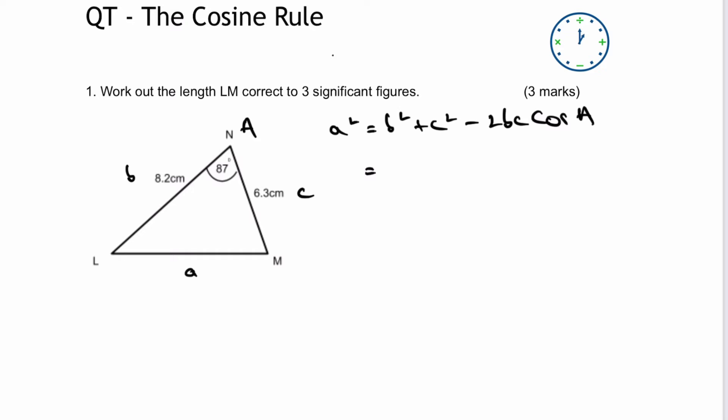So it allows me then to start writing my values in. And so that's going to be 8.2 squared plus 6.3 squared minus 2 times 8.2 multiplied by 6.3 multiplied by the cosine of 87 degrees.